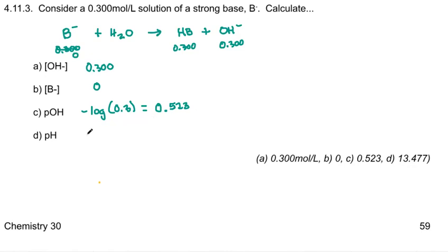And then if you want the pH, pH is always, at least at room temperature, 14 minus the pOH. And 14 take away 0.523 is 13.477.